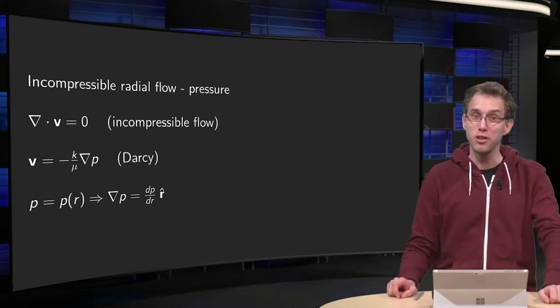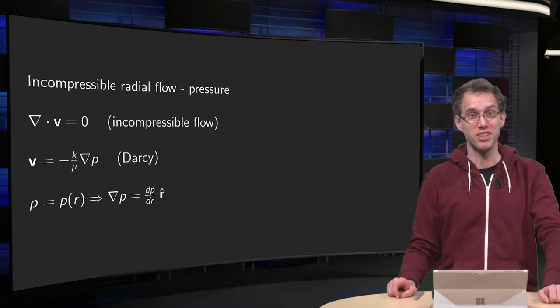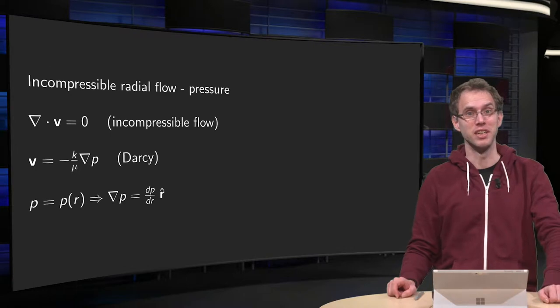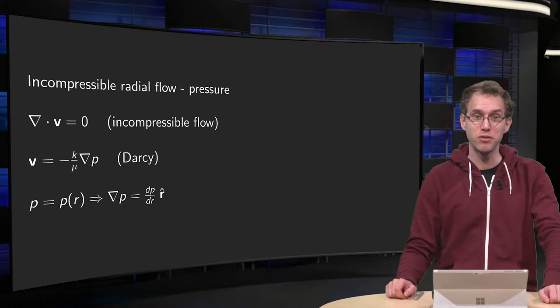We have seen that the velocity in radial flow may blow up at r equals zero. This is not some mathematical singularity. The problem comes from the underlying physics, constant flux due to incompressible flow.